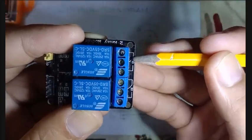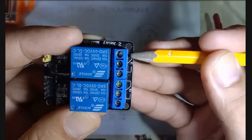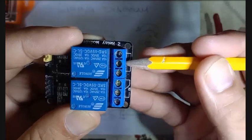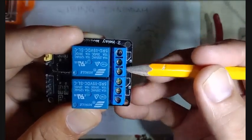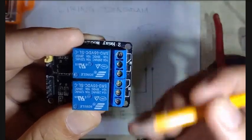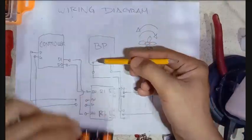This is our normally closed. As you can see it is connected to the common. This is the common and this is the normally open, same case with the second relay. So we have the positive terminal and the negative terminal.